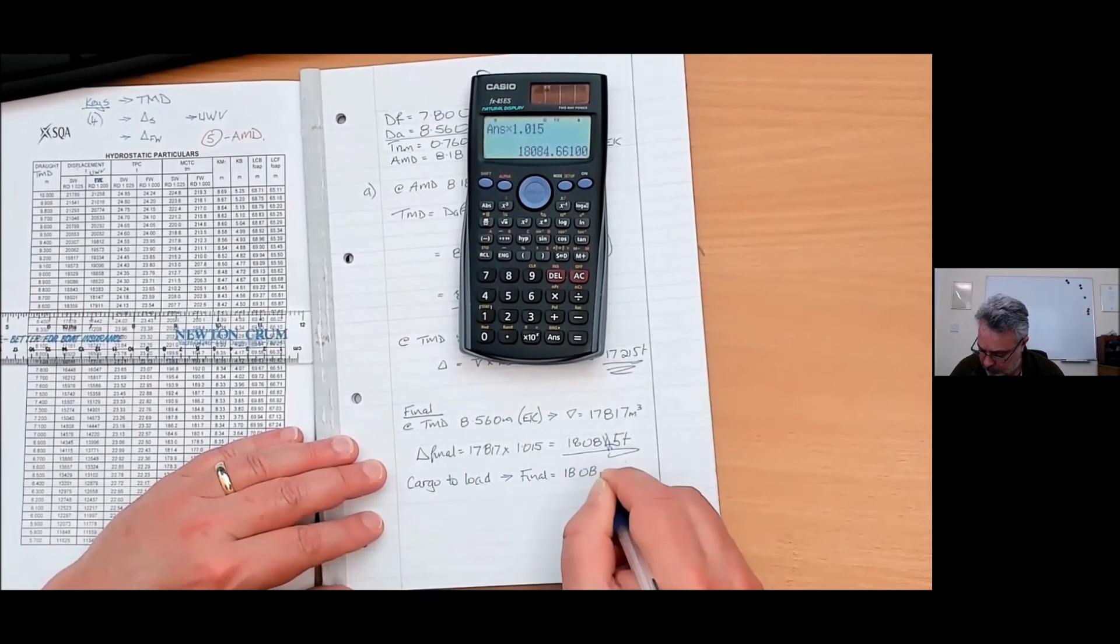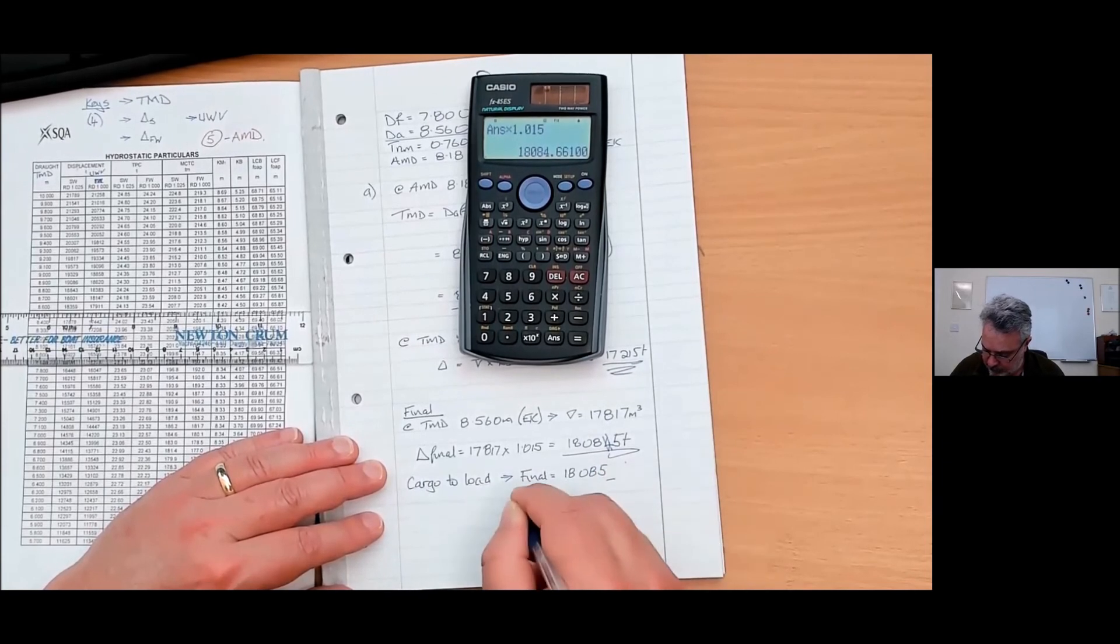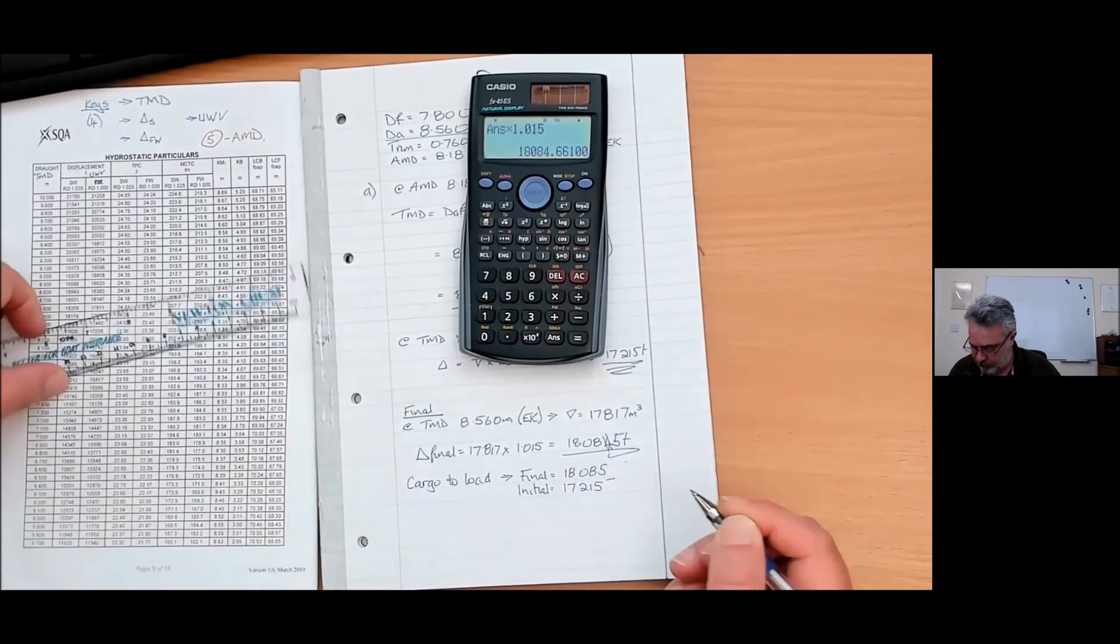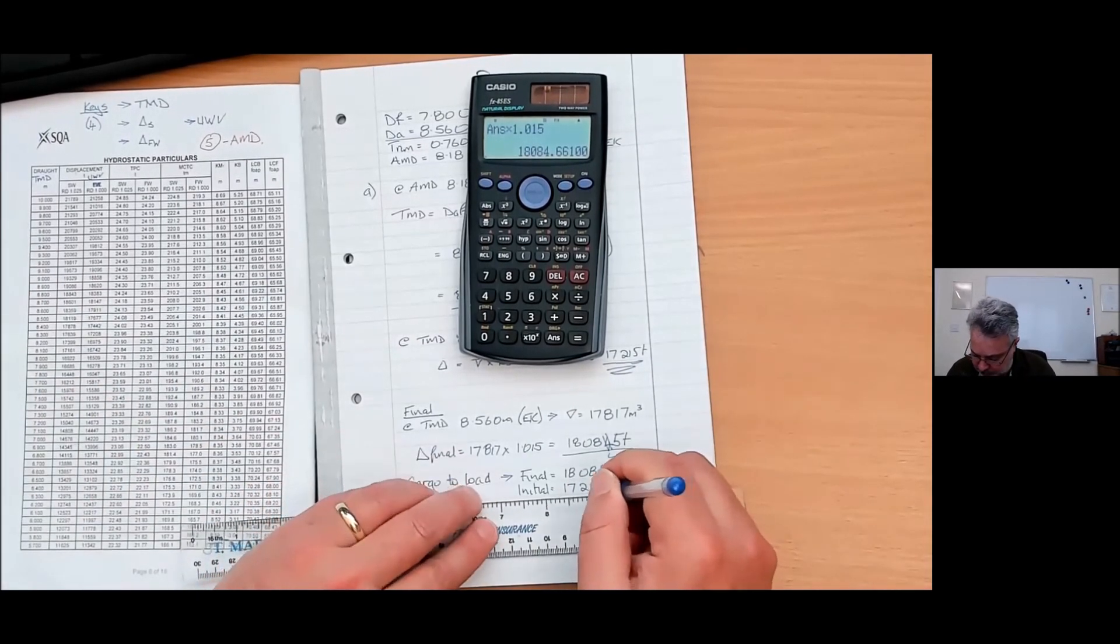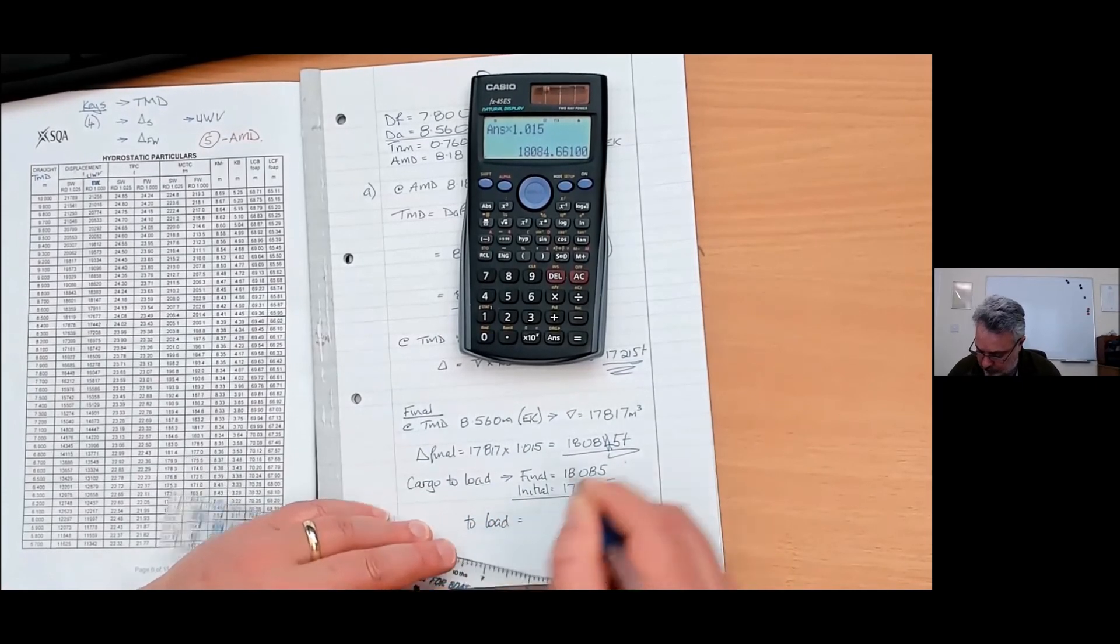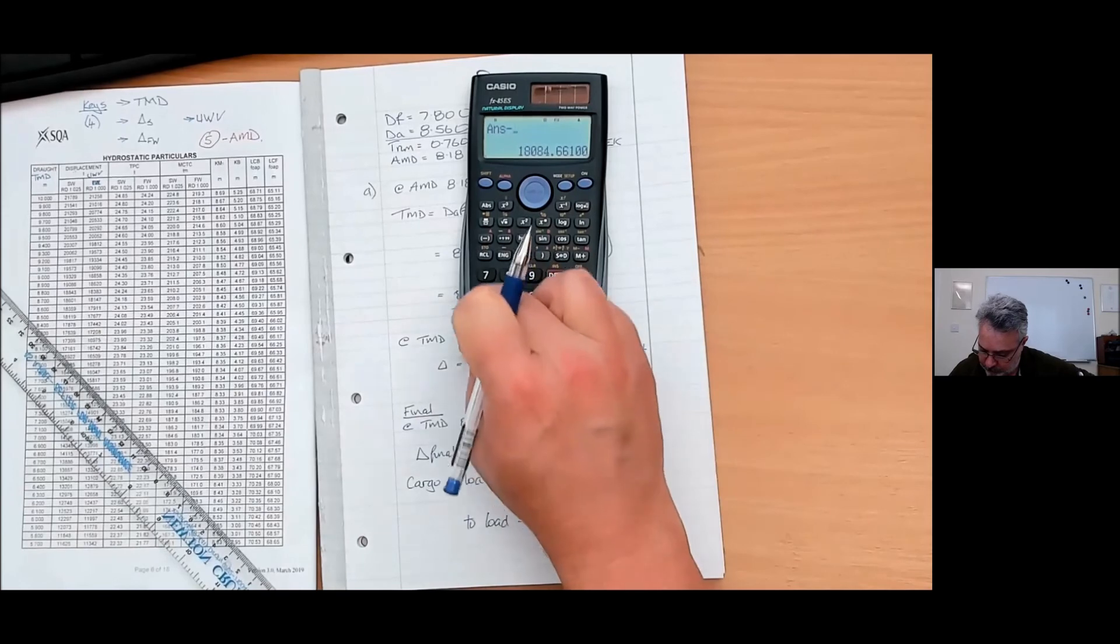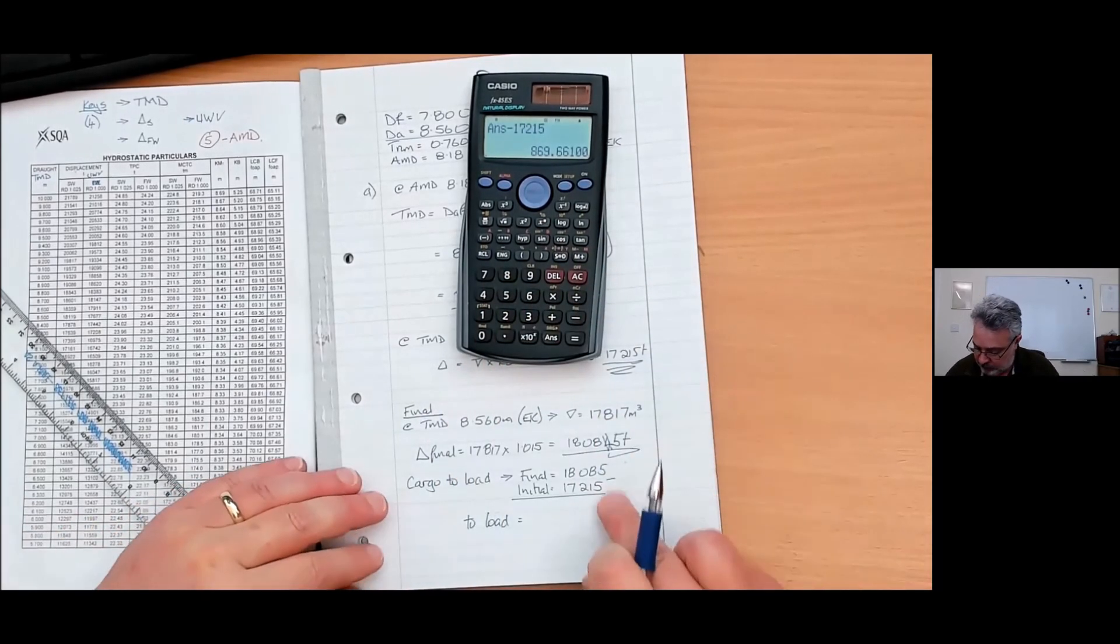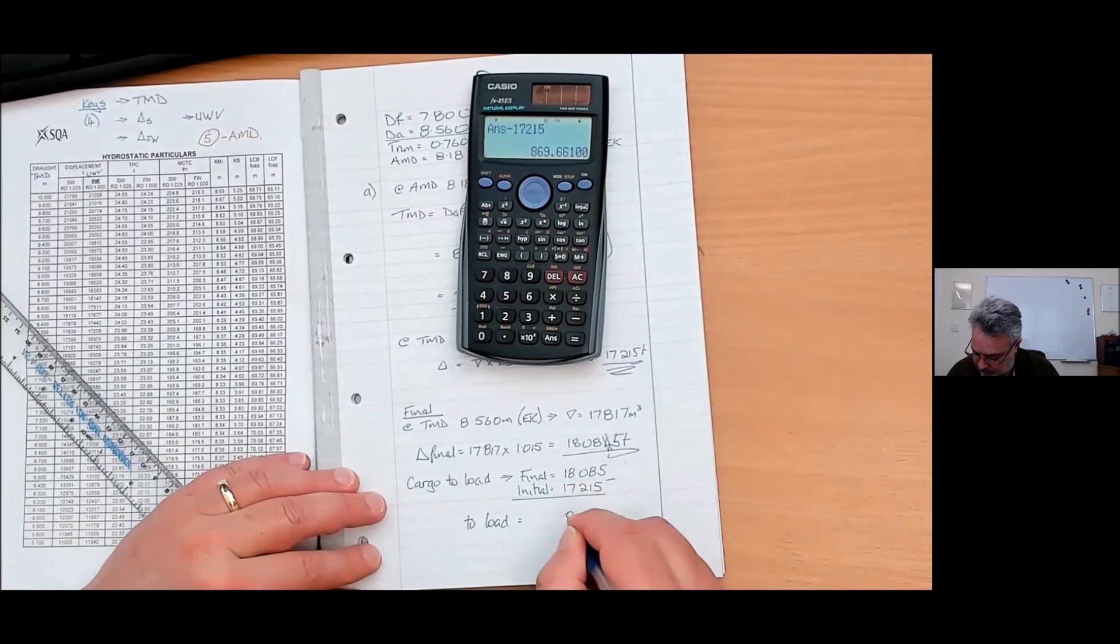Now let's go and do final. At TMD 8.560 meters, that's even keel, so let's go and get the volume. 8.560, so interpolation, we've got six out of ten. Shift restored into the memory, come down in our volume column, let's get our difference. Nine on one minus six seventy seven, multiplied by interpolation factor is 140 and we're going up six thirty seven, so one seven eight one seven cubic meters. Therefore displacement final, seven eight one seven times 1.015 is 18,085 tons.